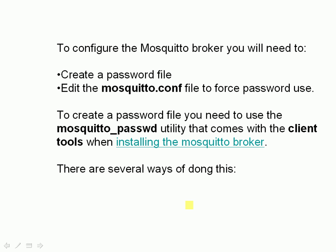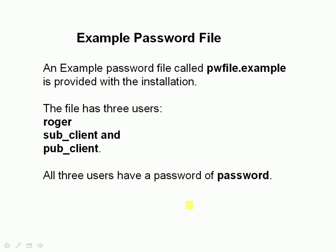There are two ways of creating the password file and we're going to cover both. If you don't want to create your own, there is actually an example password file called pwfile.example that comes with the client tools. It has three users — Roger, subclient, and pubclient — and all three have a password of 'password', so you can use that for testing.